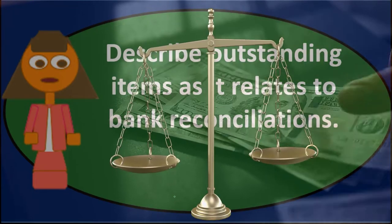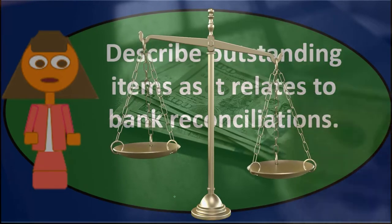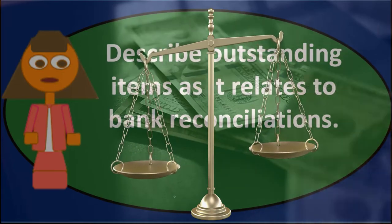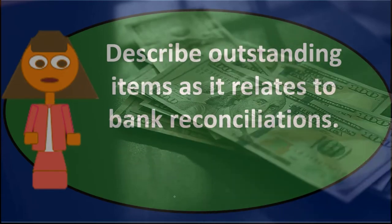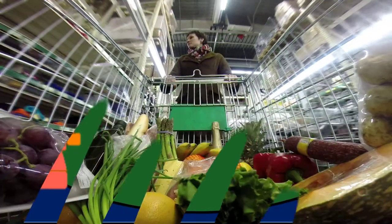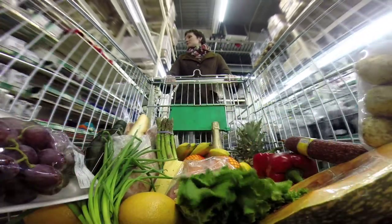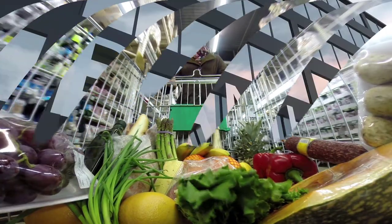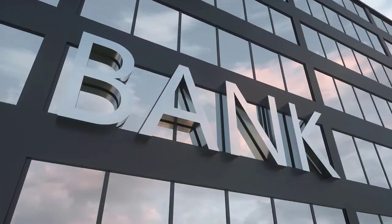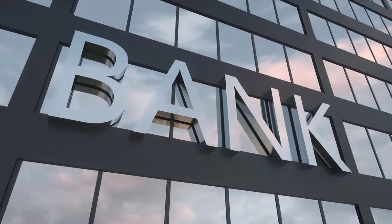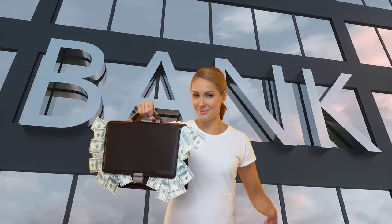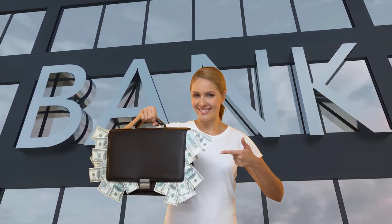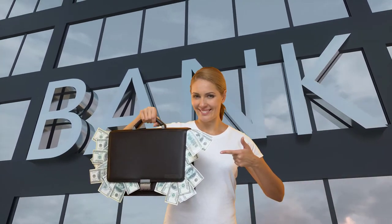Those two amounts will not be in balance. You would think they would, but they're never going to be in balance even in a perfect system unless there were no outstanding items, because there are going to be issues of checks that we have issued that haven't cleared the bank — just timing differences — and there are going to be issues in terms of deposits possibly as well.